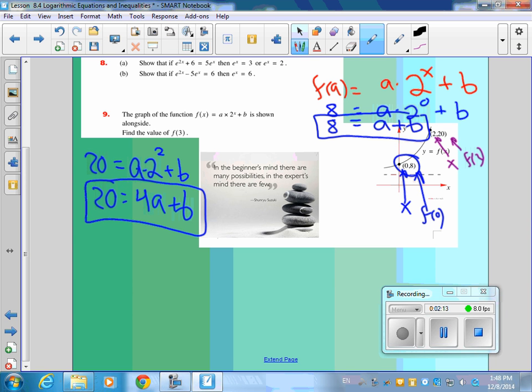f of a is your y, a is your x. So now I have two equations and two unknowns. And what some people do is they'll take the opposite of the, multiply top left and right by negative 1. And go ahead and write that. Negative 8 equals negative a minus b over 20 equals 4a plus b. And add them up in a column.